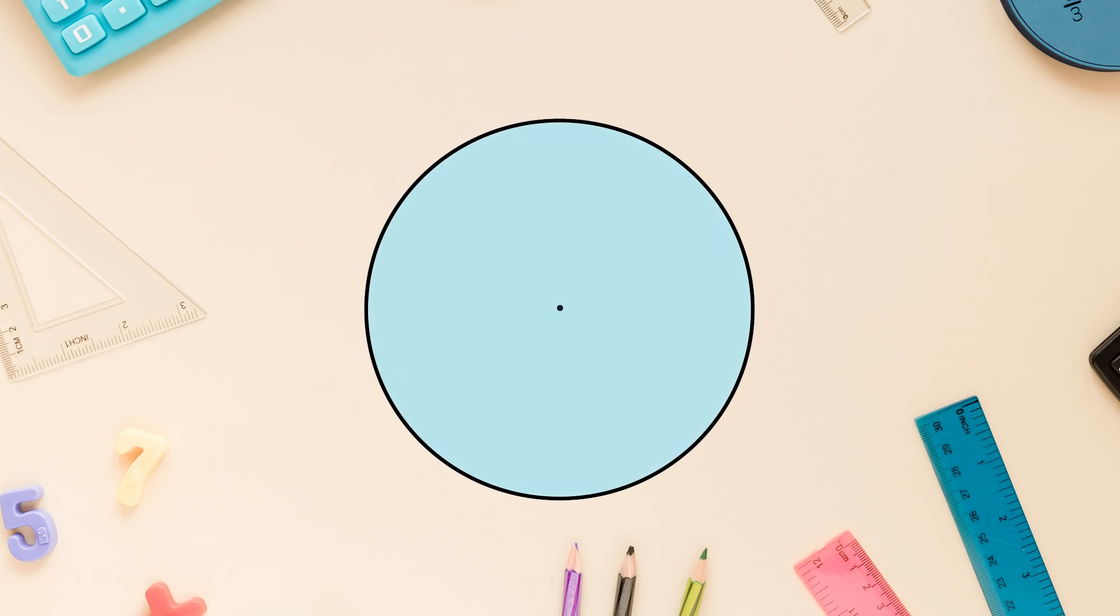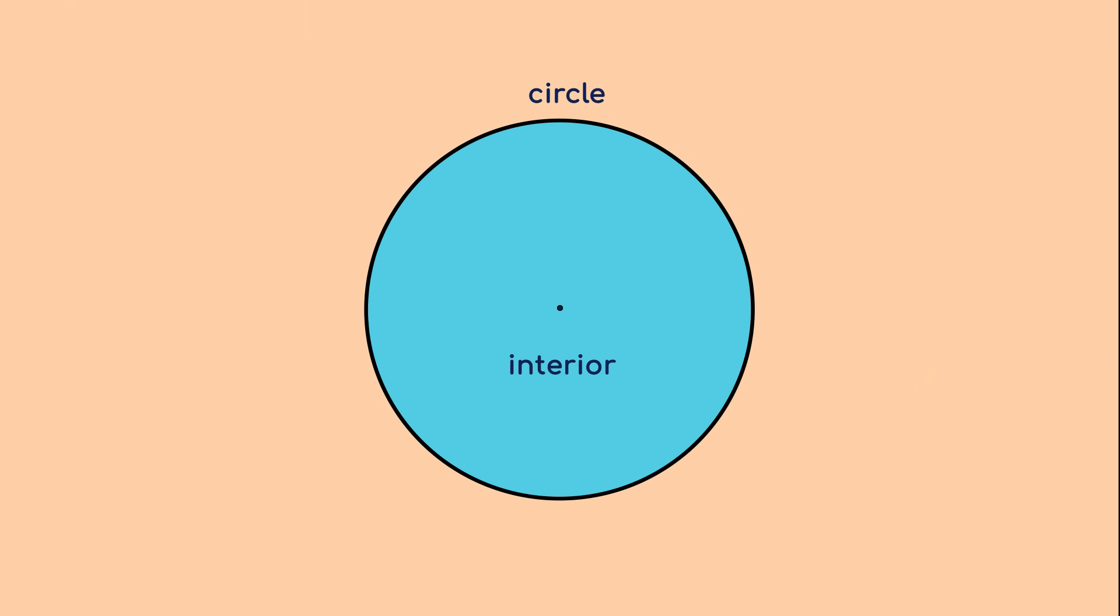They are: 1. Inside the circle, which is also called the interior of the circle. 2. The circle. 3. Outside the circle, which is also called the exterior of the circle. See figure 10.4. The circle and its interior make up the circular region.